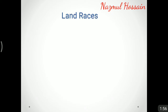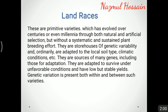Land races are primitive varieties which have evolved over centuries or even millennia through both natural and artificial selection, but without a systematic and sustained plant breeding effort. They are storehouses of genetic variability and are ordinarily adapted to the local soil type and climatic conditions. They are resources of many genes including those for adaptation, are adapted to survive under unfavorable conditions, and have low but stable yields. Genetic variation is present both within and between such varieties.